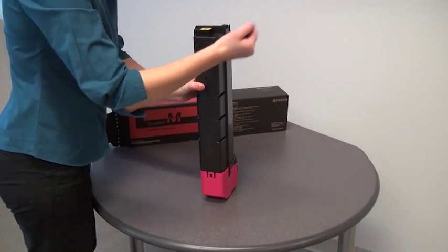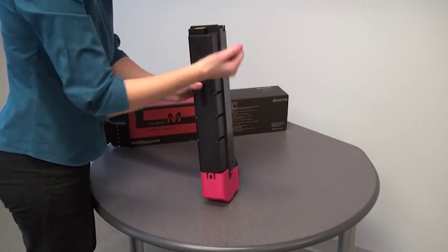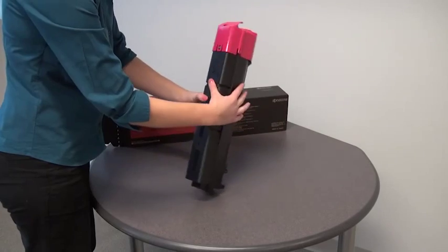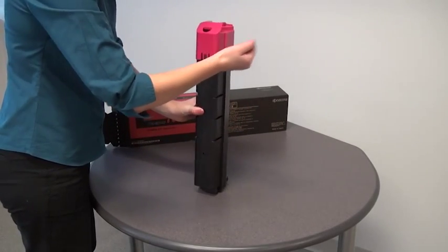Using the side of your hand, tap the container five times on both sides to dislodge any toner that may have settled during shipping or storage.